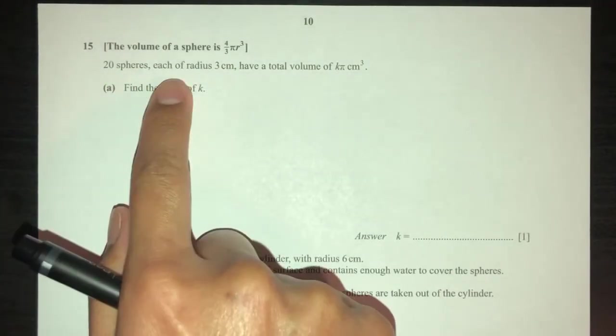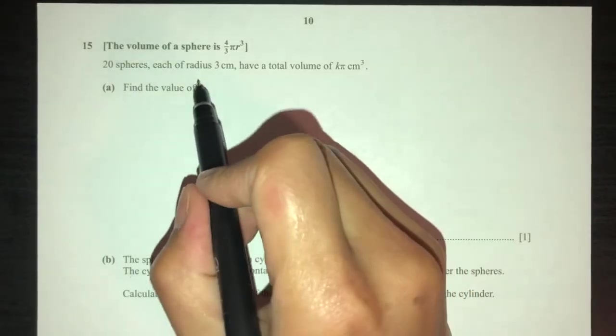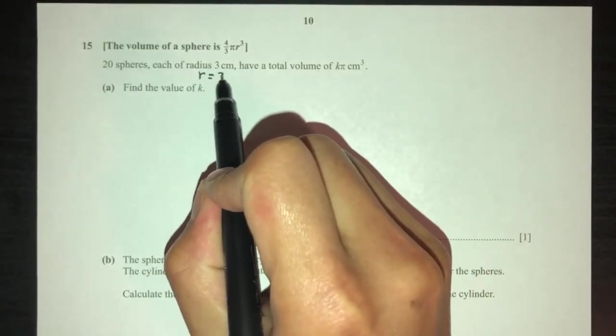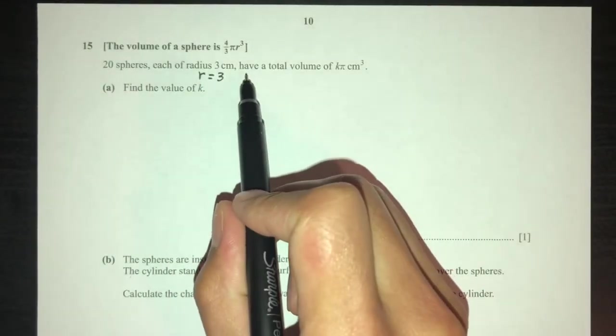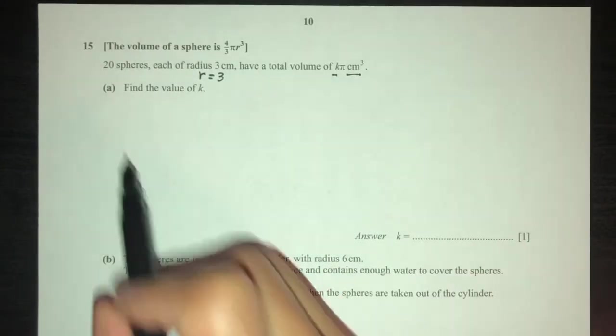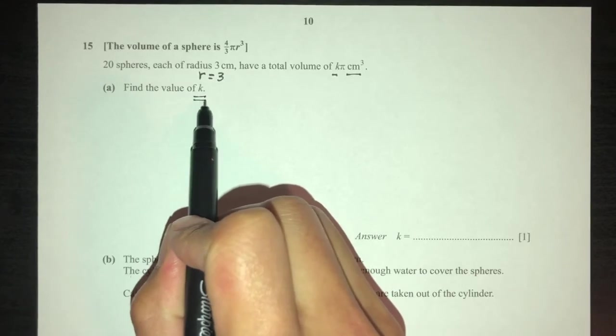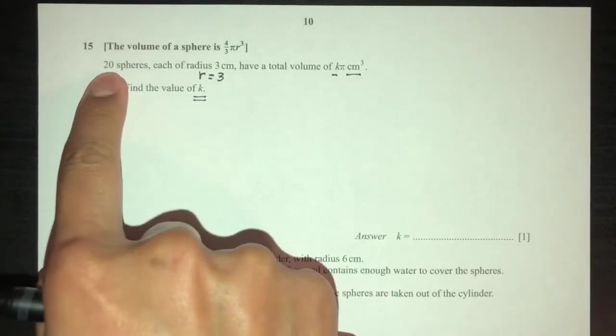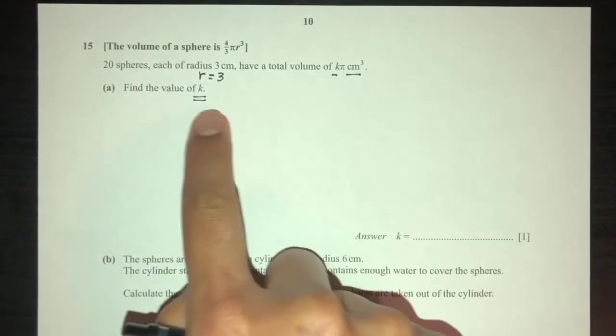Now, 20 spheres each of radius r equals 3 have a total volume of k pi centimeter cube. So we have to find the value of k. First we have to find the volume of 20 spheres, and then compare to find the value of k.